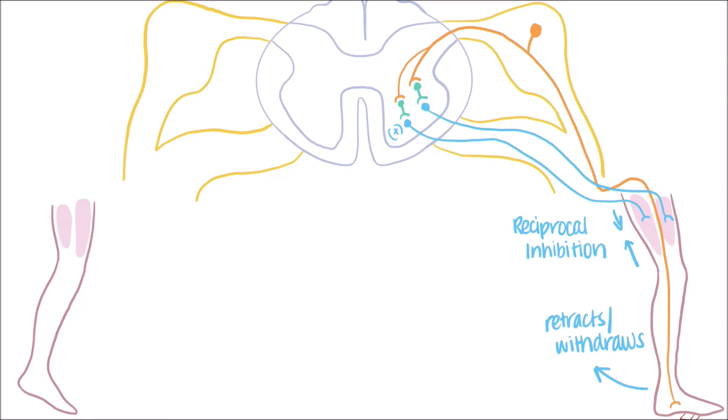Often, this reflex is paired with the extension of your opposite leg to help maintain balance. In these cases, the sensory neuron has endings that cross the midline and synapse with two other interneurons.